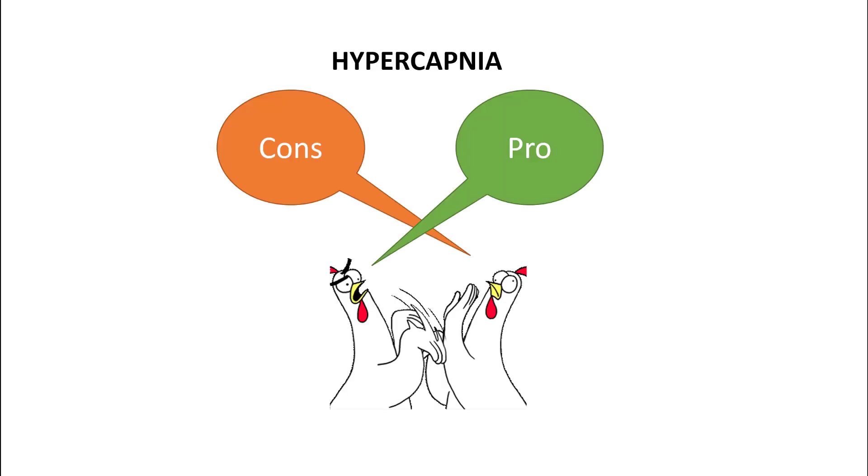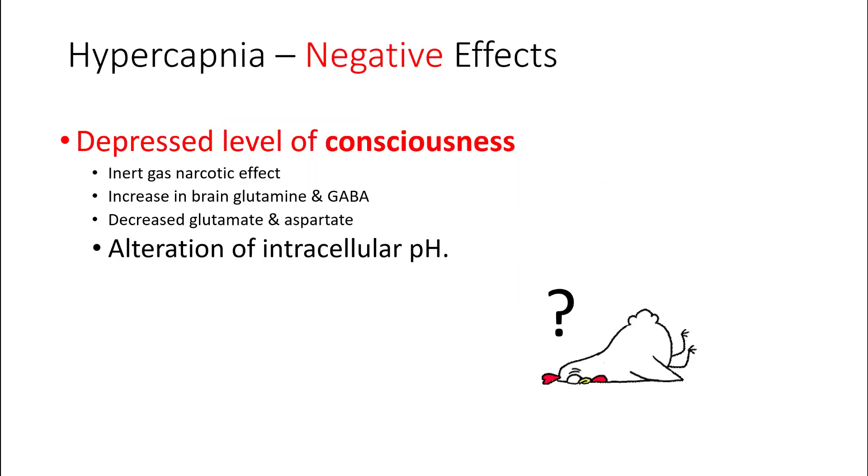Let's talk about pros and cons of hypercapnia and try to understand how carbon dioxide can help you or harm you. Everybody knows about the depressed level of consciousness that comes with hypercapnia. The etiology of this is unclear at this time, but scientists believe that it might be related to alteration in intracellular pH and increased activity in brain glutamate and GABA receptors. Scientists have also noted decreased levels in glutamate and aspartate as well.